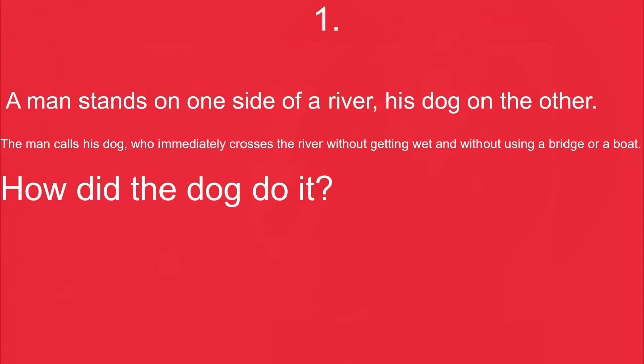First, a man stands on one side of a river, his dog on the other. The man calls his dog, who immediately crosses the river without getting wet and without using a bridge or a boat. How did the dog do it?